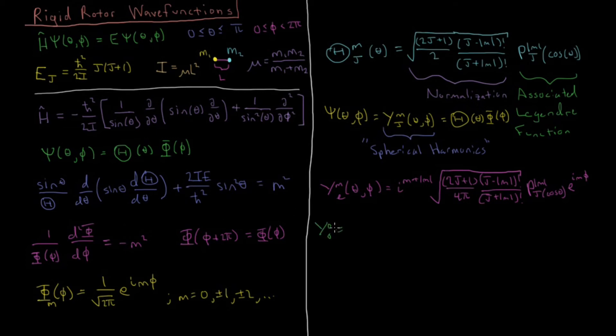So what do these all look like in practice? So if we pick Y 0, 0, that's just a constant function, 1 over 4 pi. It's the same everywhere in space, it's just normalized to be 1 over an entire unit sphere.